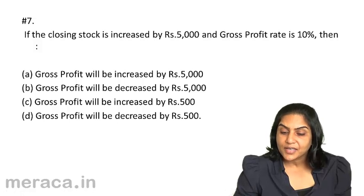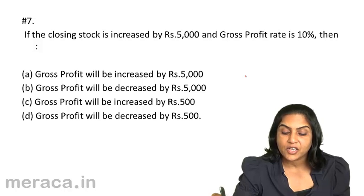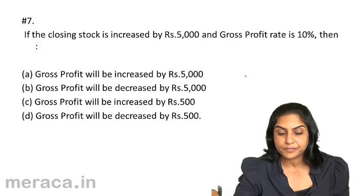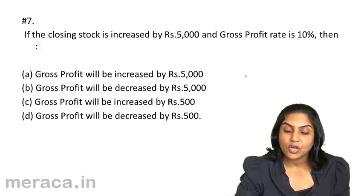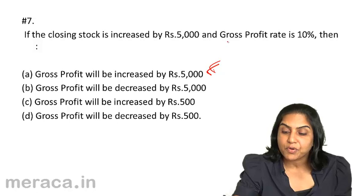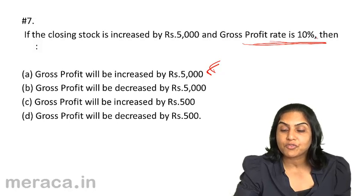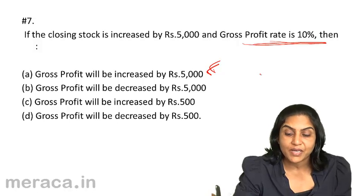If the closing stock is increased by Rs. 5,000 and gross profit rate is 10%, then gross profit will be: A. increased by Rs. 5,000; B. decreased by Rs. 5,000; C. increased by Rs. 500; D. decreased by Rs. 500. If the closing stock increases by Rs. 5,000, gross profit will also increase by Rs. 5,000. The correct answer is A. The rate of gross profit is irrelevant here as it is related to sales. If closing stock value increases, gross profit value increases by the same amount.